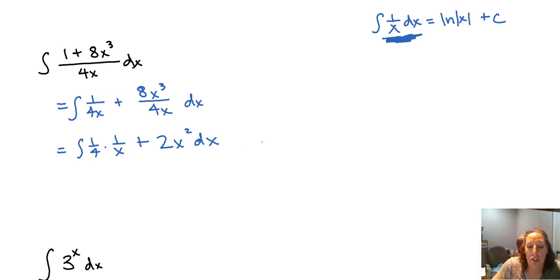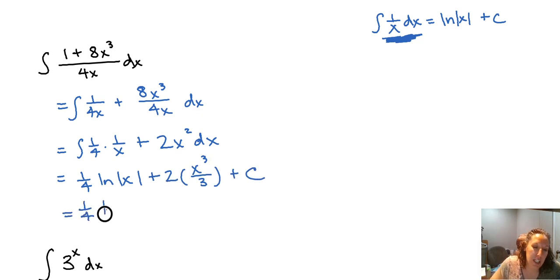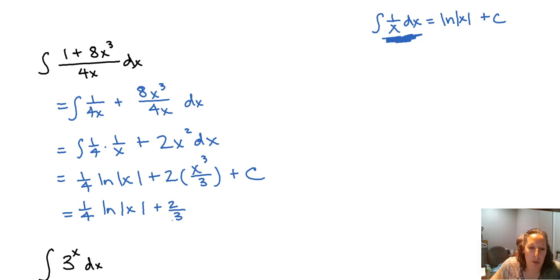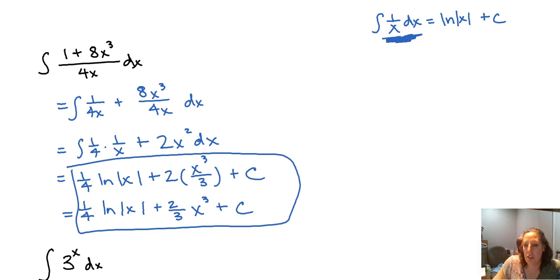Now we're ready to take the integral. We get 1/4 times the natural log of the absolute value of x, plus the antiderivative of 2x squared, which is 2 times x cubed over 3, plus C. Cleaning up, we write that as 2/3 times x cubed. You could really leave it in either of those last two forms.